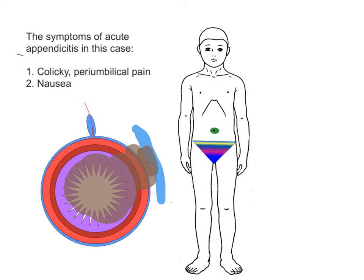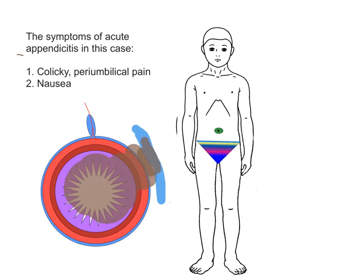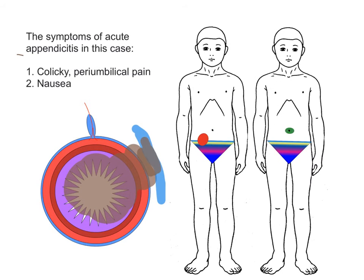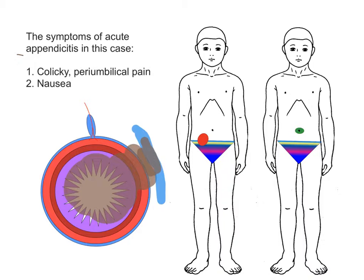The nature of the pain is sharp, and pressing on it or stretching it elicits a marked response from the patient. So now we have two more symptoms that we can explain: the movement of the pain into the right iliac fossa, and the change in the nature of that pain.